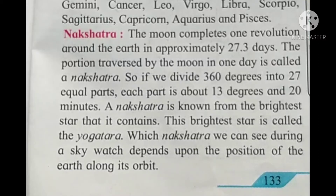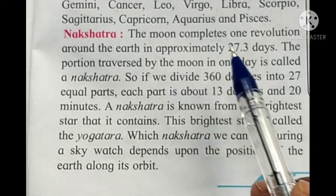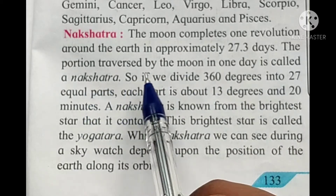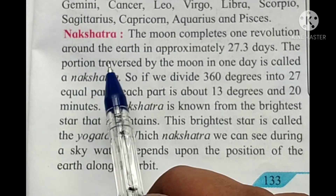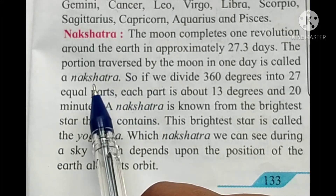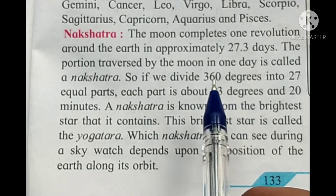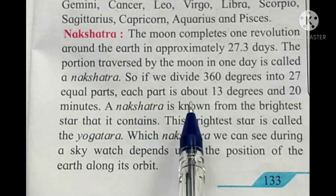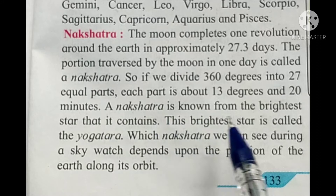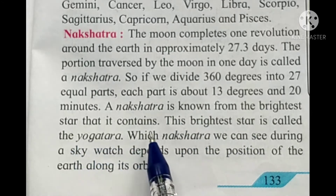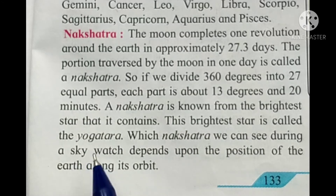The moon completes one revolution around the earth in approximately 27.3 days. The portion traversed by the moon in one day is called a nakshatra. If we divide 360 degrees into 27 equal parts, each part is about 13 degrees and 20 minutes. A nakshatra is known from the brightest star it contains, and this brightest star is called a Yogatara.